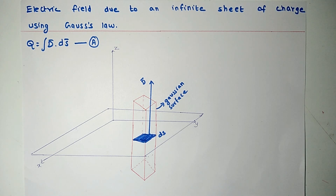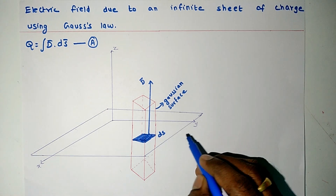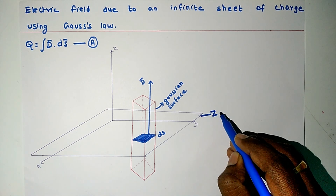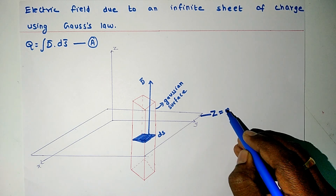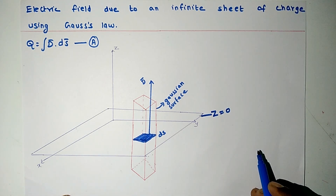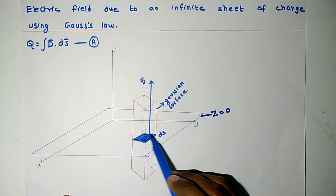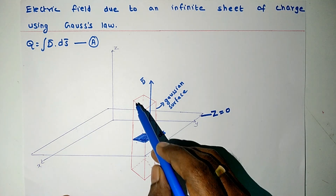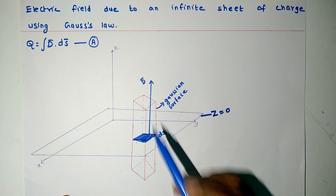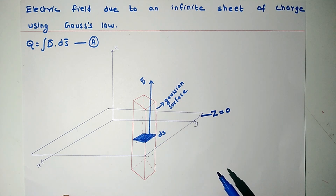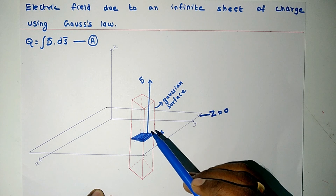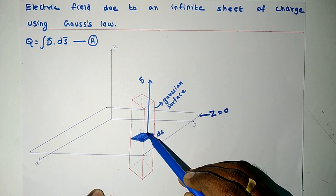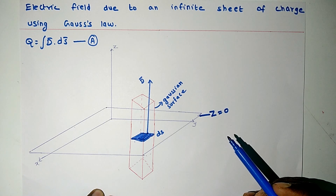Equation A shown here is the expression for charge enclosed within a closed Gaussian surface. Now let us consider an infinite sheet of charge placed on the z equals zero plane. To find out electric flux density, a small differential area ds is taken on the infinite sheet of charge, and a closed Gaussian surface in the form of a cube has been constructed which encloses that differential area. A vector D has been constructed from the charge distribution perpendicular to the sheet of charge.